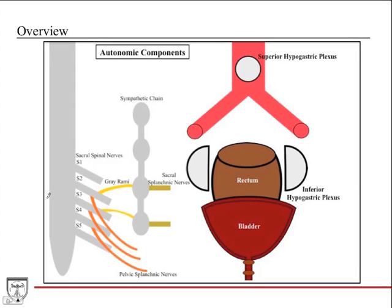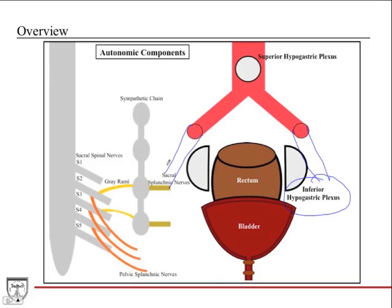Starting with an overview, we've walked through the autonomic components in this diagram that are involved in the pelvis. The central hub of both parasympathetic and sympathetic activity in the pelvis is the inferior hypogastric plexus. This is a network of ganglia and nerves that surround and flank the rectum on either side, just medial to the internal iliac artery on either side, and they receive both sympathetic and parasympathetic fibers.